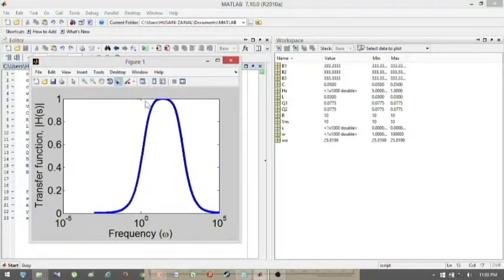This is the graph. If I point it at the peak here somewhere, the X point for that particular point is 24.91, approximately same as the resonant frequency that is 25.8199. The quality factor is 0.0775. For quality factor 1, it's the same as the quality factor 2. The bandwidth is 333.3333. Let's just say 333.33.